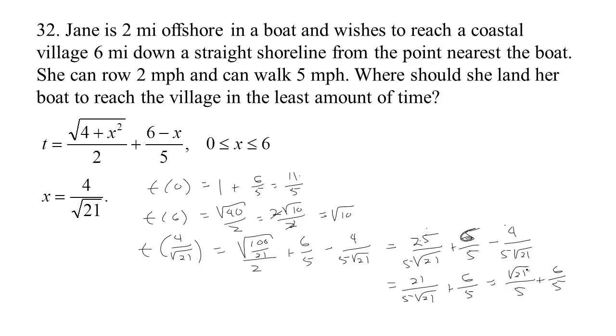Now, the square root of 21 is less than five. So if we have a number less than five divided by five, this is less than one. So we know that this is definitely less than one plus six fifths, which was our next lowest time, right? So we had root 10 as a possible time. That's more than three. We had this time, which was one plus six fifths, eleven fifths. And then notice that this one has to be less than that. So this gives us our minimum time.